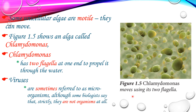Chlamydomonas moves using structures known as flagella. Chlamydomonas has two flagella at one end to propel it through the water.